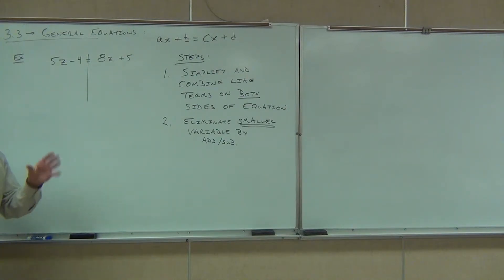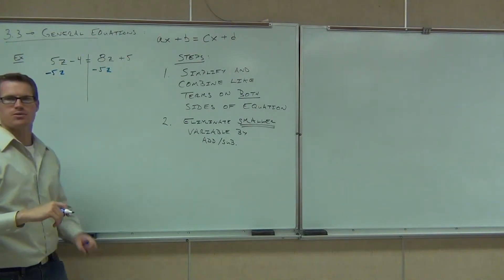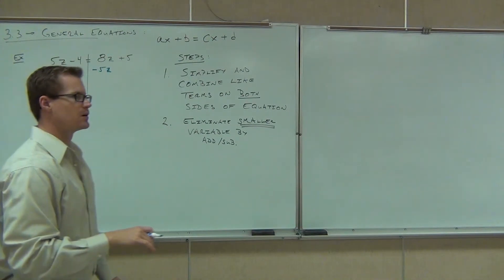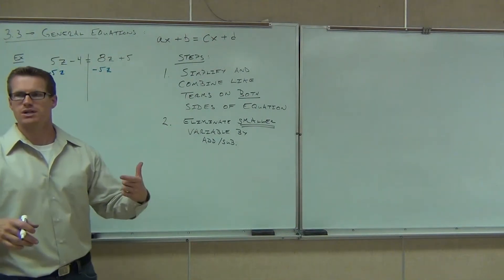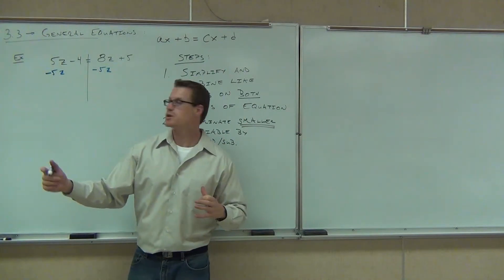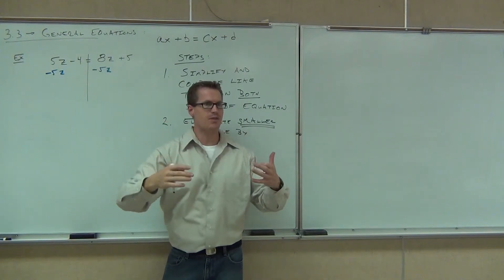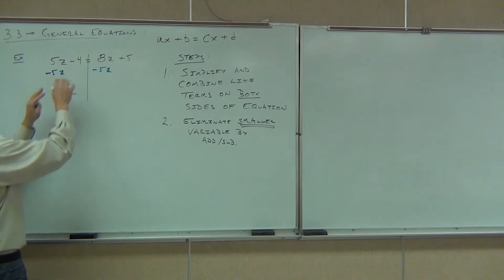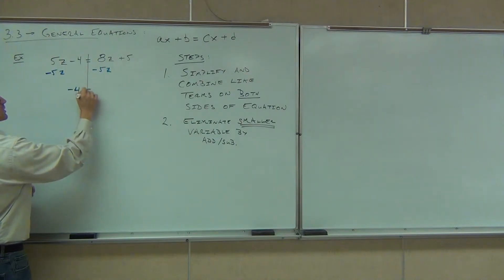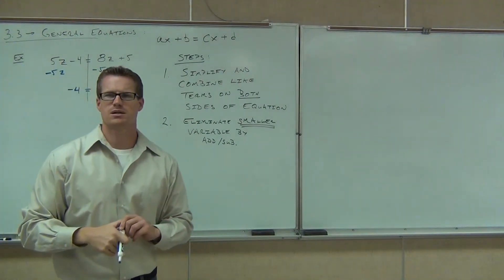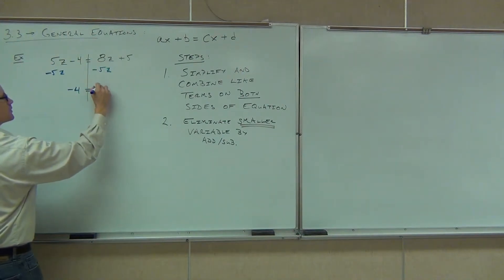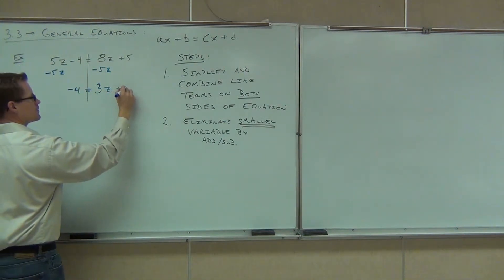In our case, our smaller variable is 5Z. How do we get rid of the 5Z? It's always going to be either add or subtract when you're moving a variable. We are certainly going to subtract 5Z. We do that here, we do that here. Whatever you do to one side, you do exactly the same thing to the other side. By doing that on both sides, we actually create some like terms.